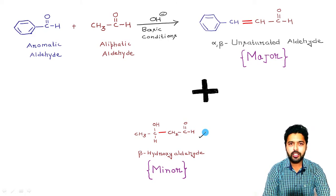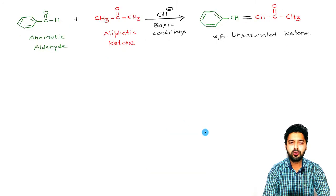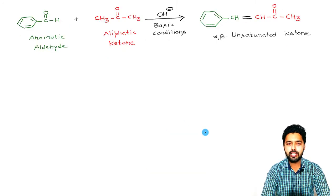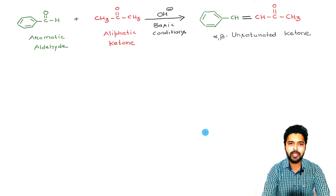The final outcome of this Claisen-Schmidt reaction, in which some aromatic aldehyde is reacting with some aliphatic aldehyde, gives two products: the major product will be the alpha-beta unsaturated aldehyde and the minor product will be the other beta-hydroxy aldehyde. So the first reaction of the aromatic aldehyde and aliphatic aldehyde is over, and you have seen that two products will be formed — one major and one minor.